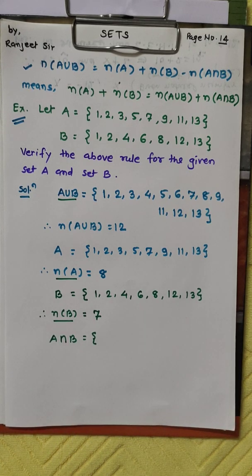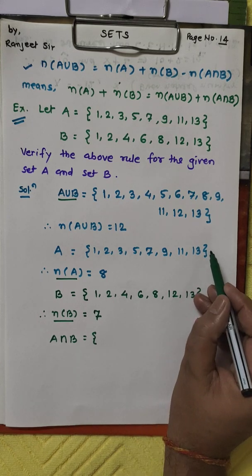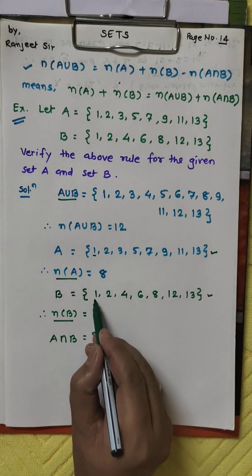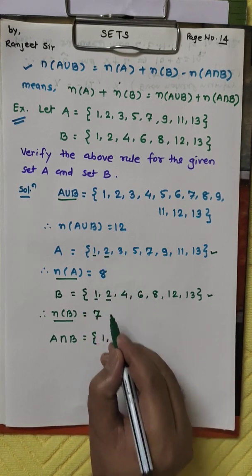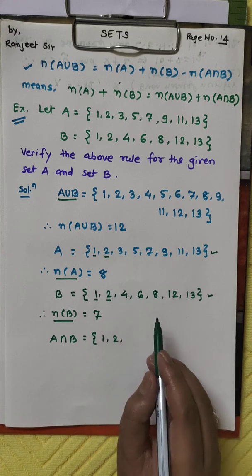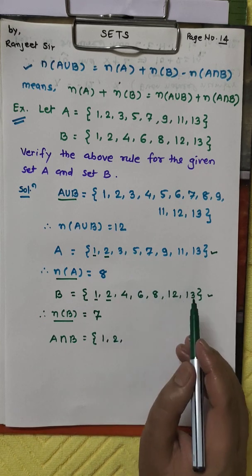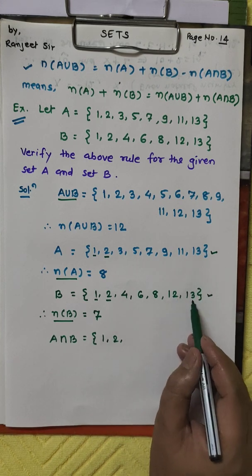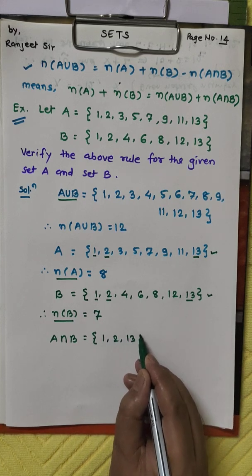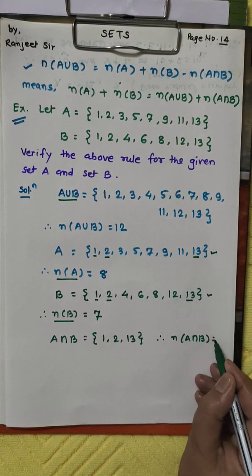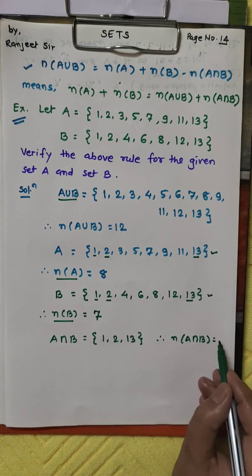Now we find A∩B. Intersection means all common elements present in both set A and set B. Checking: 1 is common, 2 is common, 3 is not common, 4 is not common, 5, 6, 7, 8, 9, 11 are not common, and 13 is not common. So A∩B = {1, 2}. Therefore n(A∩B) = 2 elements.